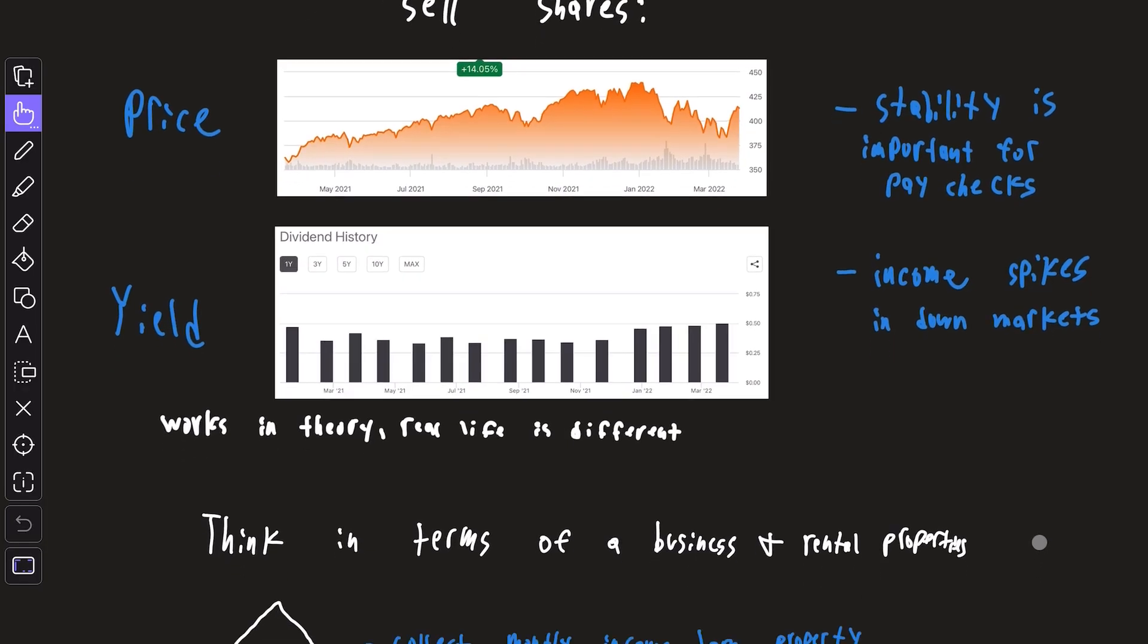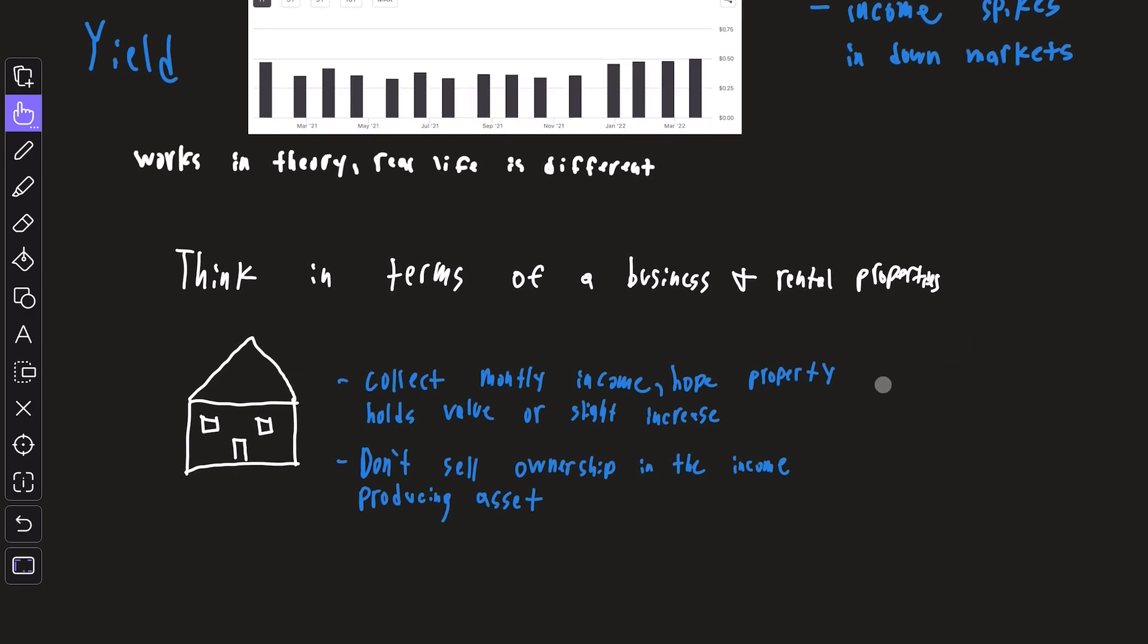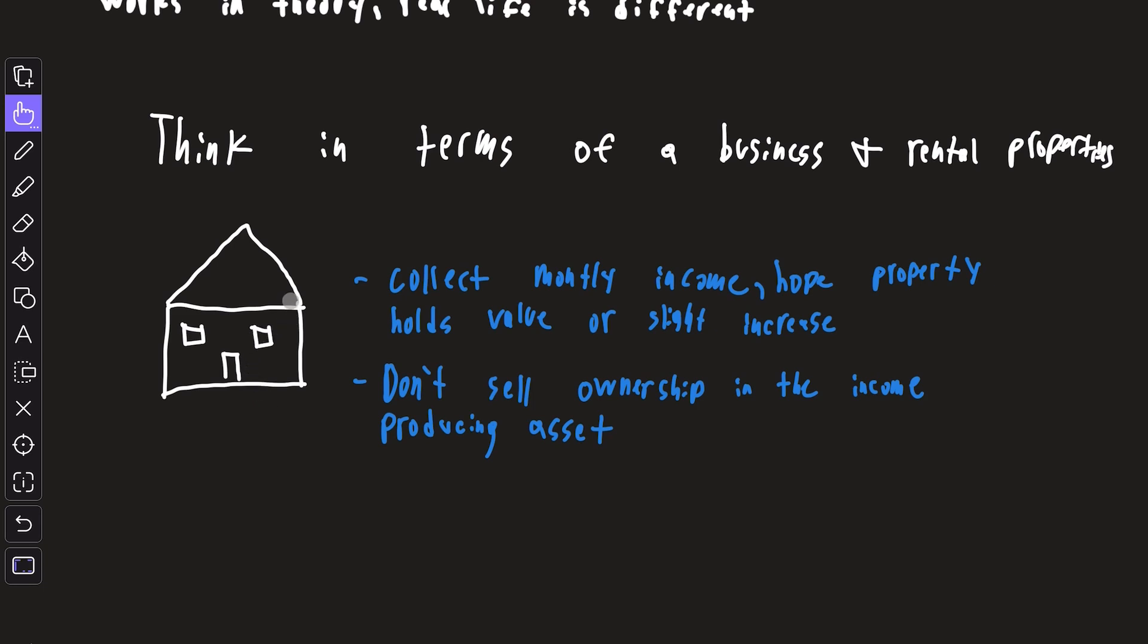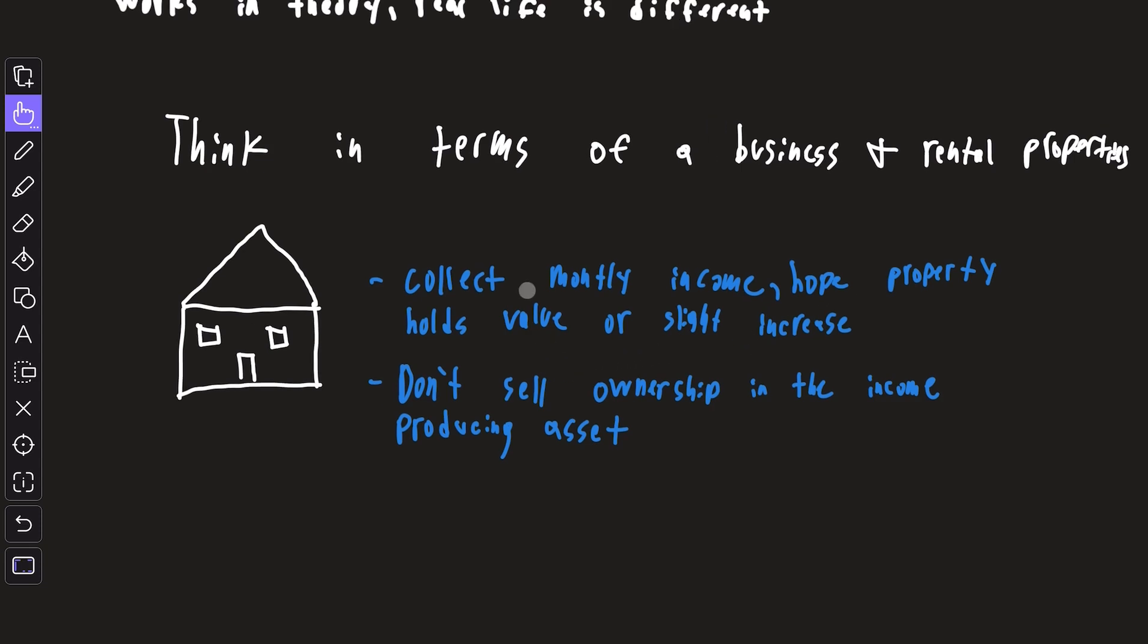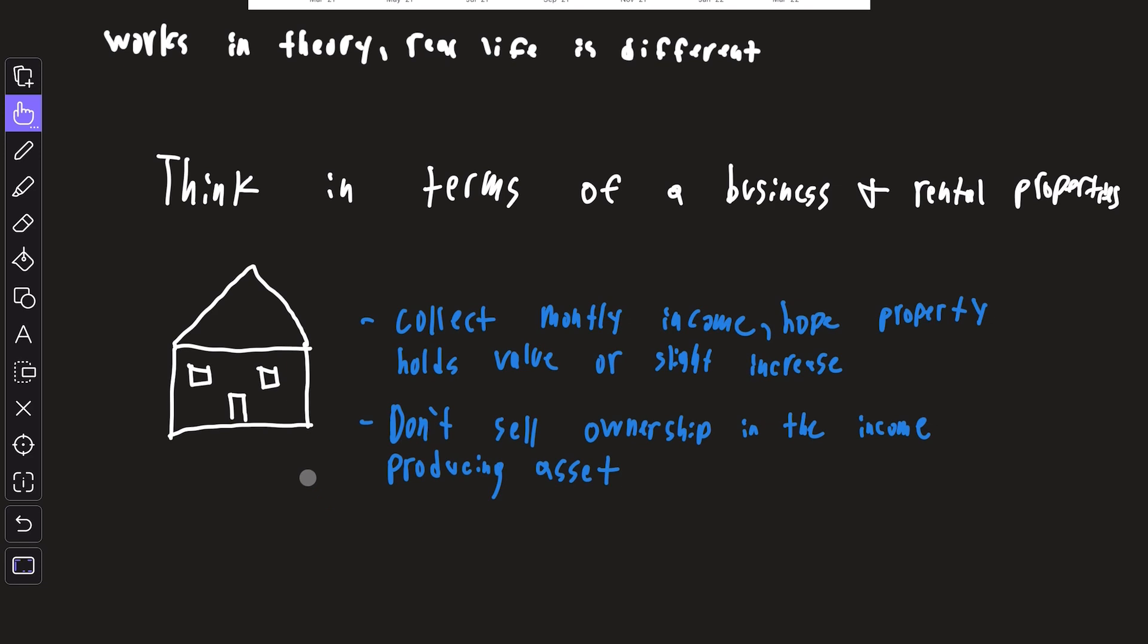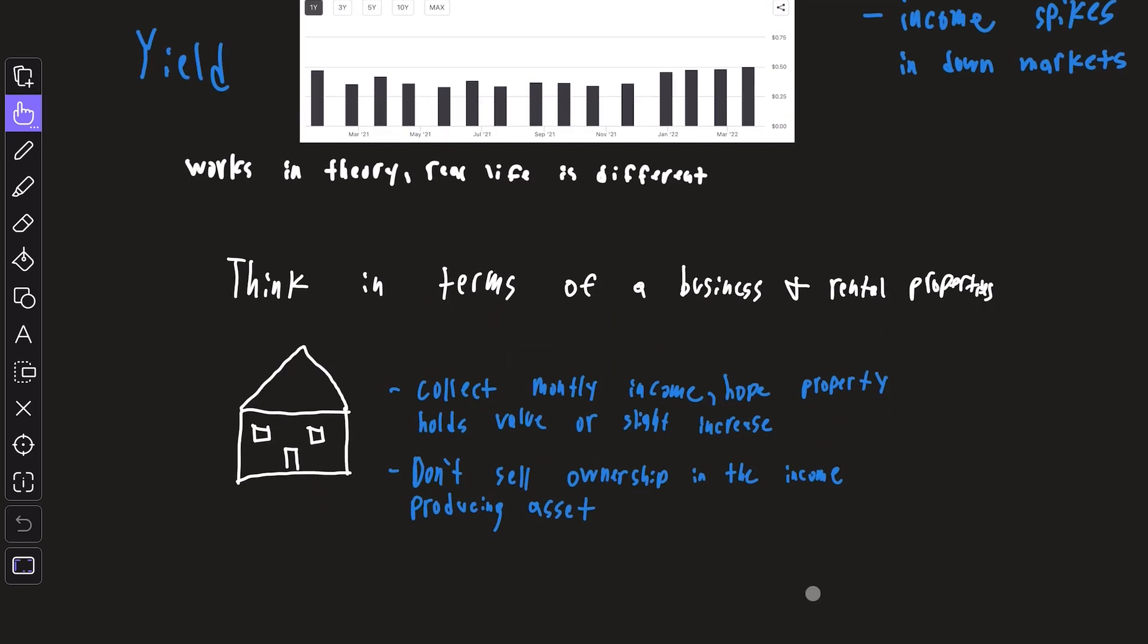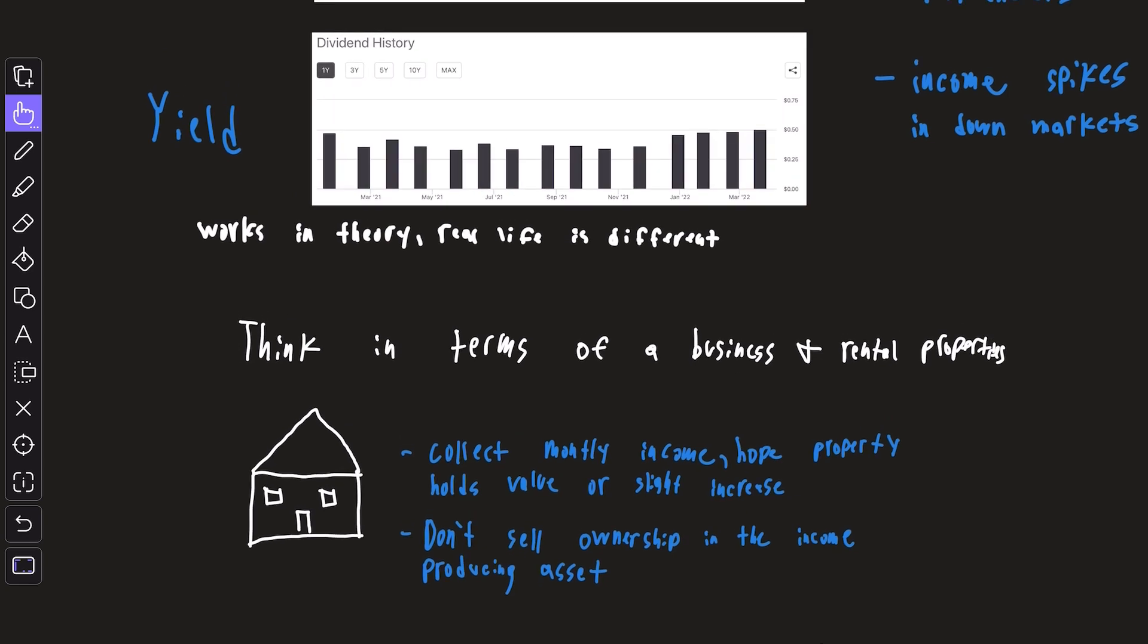But on top of this, you can take it one step further and think of these income-generating assets like a business or rental properties. With a rental property, as you can see depicted right here, you collect monthly income and you hope the property maintains its value or slightly increases year to year. This consistent monthly income is what allows you to pay your expenses and live off of. What you don't do is sell ownership of this rental property every month to mimic income.